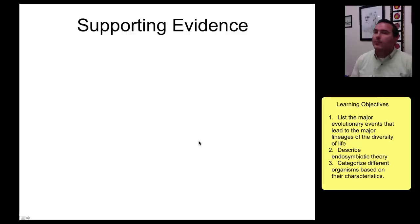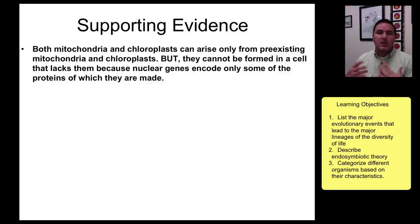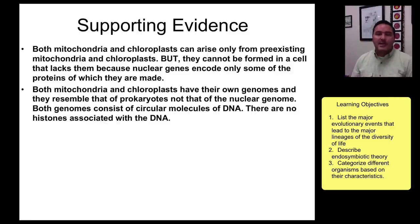Is there any evidence to support this? Because that sounds like a great story, but this is a theory, so it needs to be really strong — our best idea based on all of the evidence. First of all, mitochondria and chloroplasts can only arise from existing mitochondria and chloroplasts. You don't make them from something inside the DNA in the nucleus; they can only come from preexisting mitochondria and chloroplasts. They also have their own genomes, and those genomes resemble those of prokaryotes — they're circular, not linear, and they're about the same size.